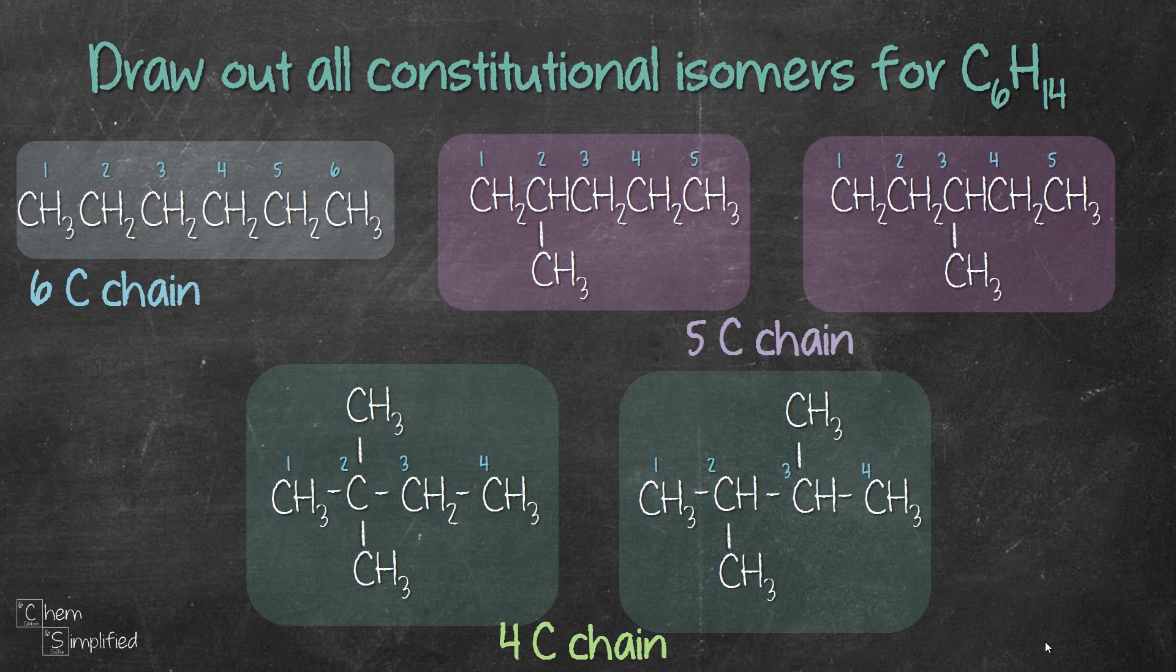Then we move on to 4 carbon chain. With 4 carbon straight in a row, you have 2 extra carbon. So we start by placing 2 carbons on carbon number 2, and then we move one of the carbon to carbon number 3. And then we tried 3 carbon chain, and it looks like it's a repeat of a 4 carbon chain. So then we know that we have exhausted all possibilities. And that's what I mean by a systematic way of drawing isomers.